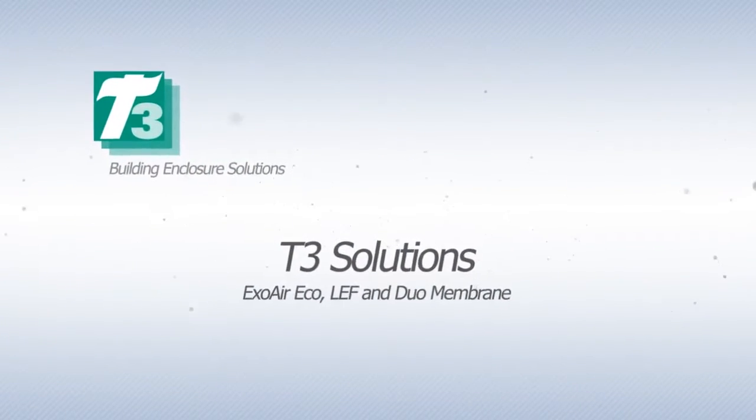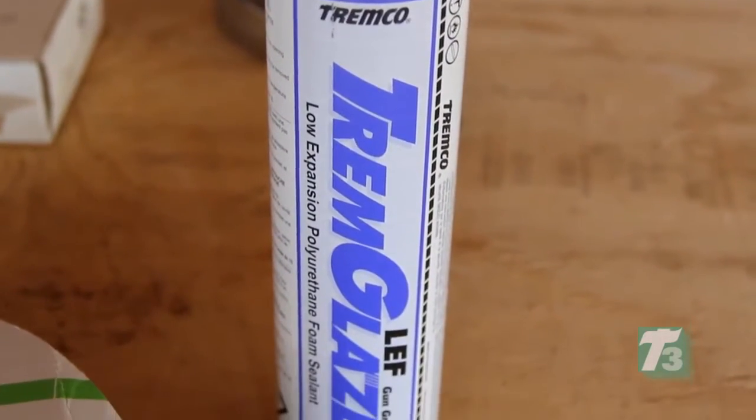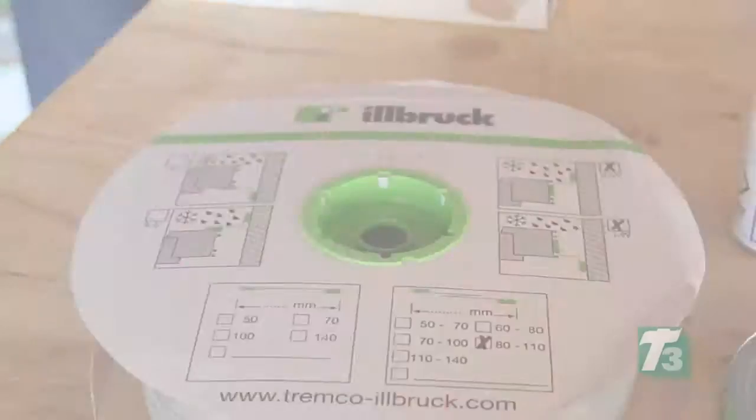In this module, we will be installing a window using Tremco's ExoAir Eco as an exterior seal, ExoAir LEF Foam as a thermal insulating layer, and ExoAir Duo Membrane as the interior seal.